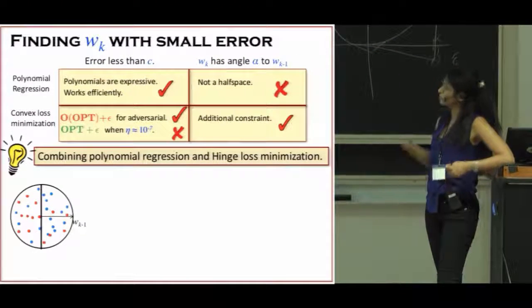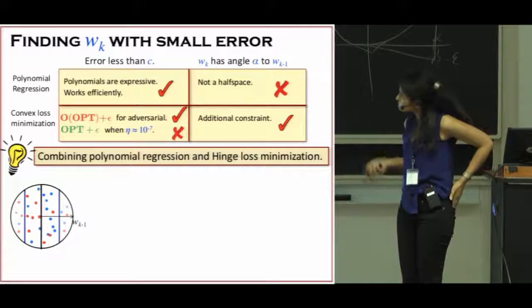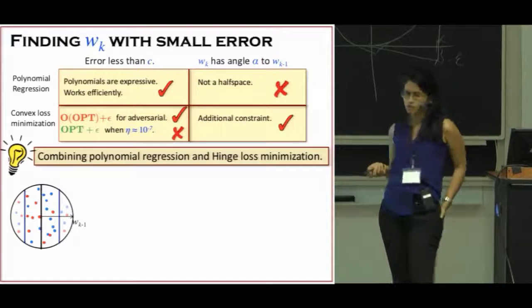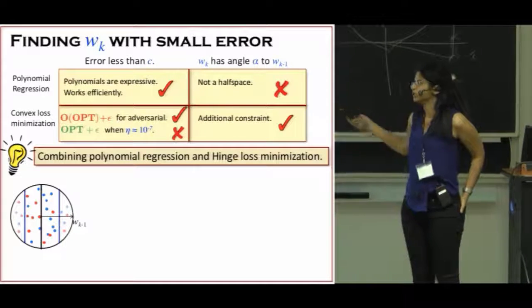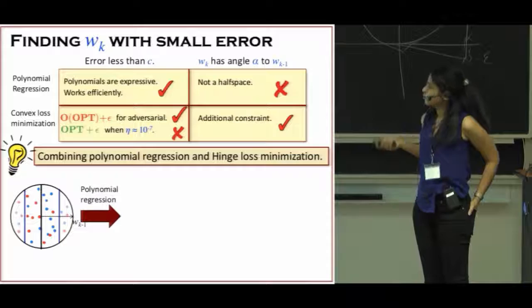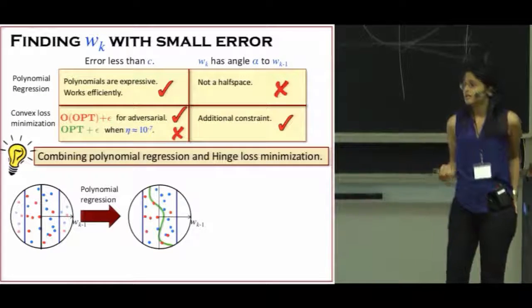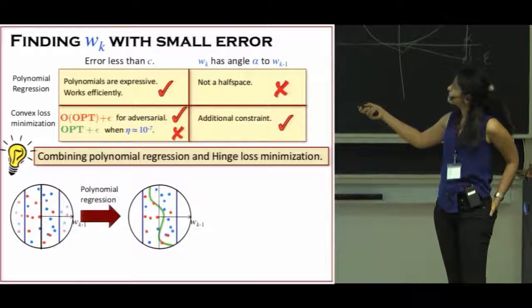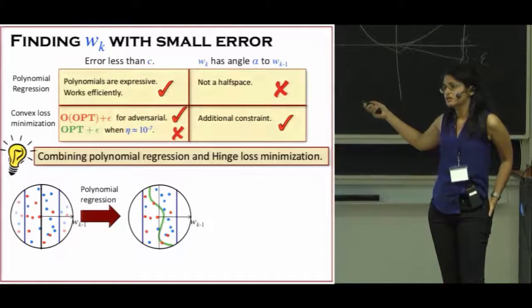First, we are going to draw some samples. Then we focus in the margins, so let's just look at the examples that are going to fall in the margin. And we are going to find a polynomial here. So using the polynomial regression algorithm, we are going to find the polynomial. So now I have a polynomial that fits this. It has a small error, but unfortunately it's not a half-space.